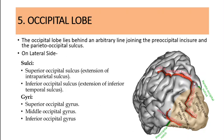Now we come to the occipital lobe. Remembering the imaginary line on the posterior lateral surface, the occipital lobe lies posterior to it. It contains the superior occipital sulcus, which is an extension of the intraparietal sulcus, and an inferior occipital sulcus, which is an extension of the inferior temporal sulcus. These give rise to the superior, middle, and inferior occipital gyri.